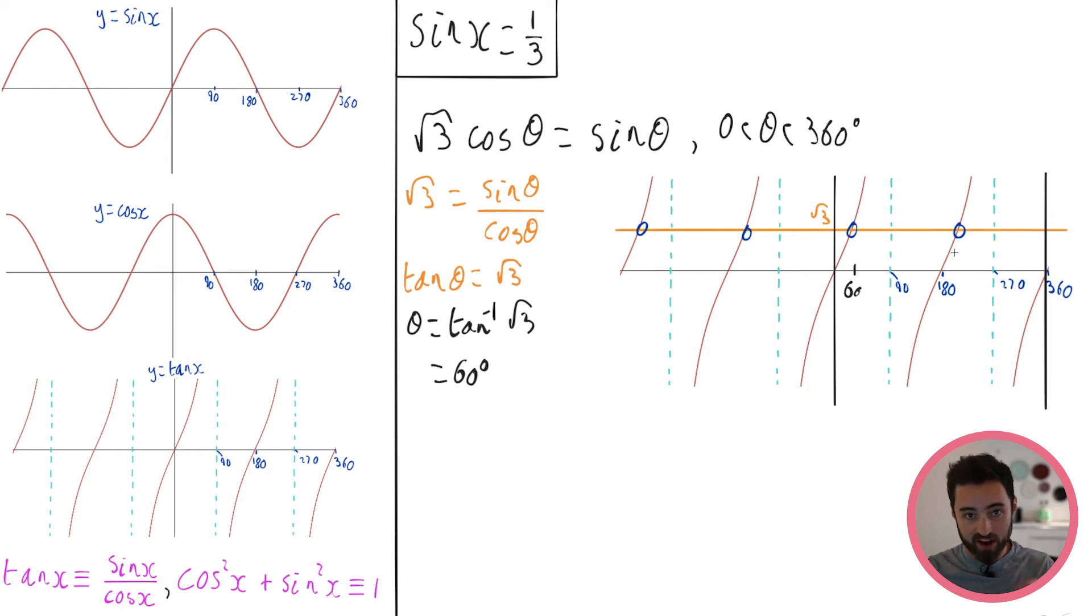I can now use the symmetries of the graph to get this. Given that the period of tan is 180, to jump between solutions, all I'm going to need to do is add and take away chunks of 180. You know, if I want to get here, take away another 180, add another 180, etc. The only one that I care about in this case is this one. So my next solution is just going to be 60 plus 180. That is going to get me this. And this makes sense, doesn't it?